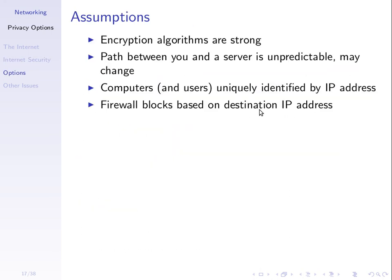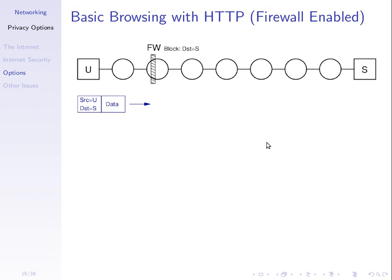Given the requirements, we'll go through a few different options. The first option is no security — just browsing with HTTP. If you try to access the server using normal HTTP, and the firewall is turned on, you won't be able to access the server, because you send a packet with your source address to destination S, it gets to the firewall, and the firewall has a rule saying anything going to destination S, don't allow it through. So we can't even access the server, let alone keep our data secure. That's the first case with HTTP — a firewall can block it.